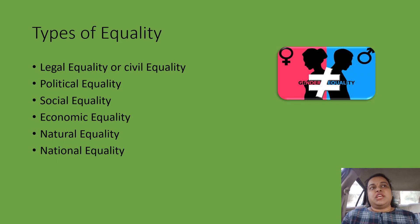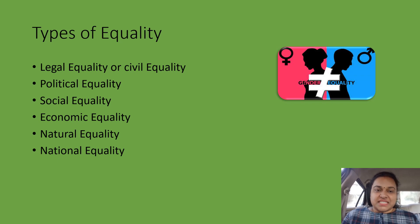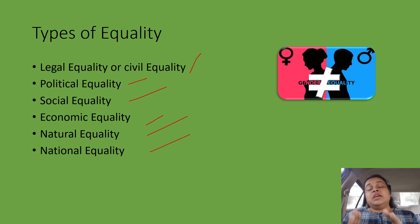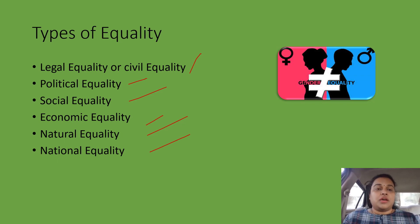After understanding the meaning of equality, let's talk about how many types of equality there are. There are basically six types of equality: first is legal equality or civil equality; second is political equality; third is social equality; fourth is economic equality; fifth is natural equality; and sixth is national equality. In all these areas, when we provide equal opportunity and minimum resources to those who are needy, that is equality.